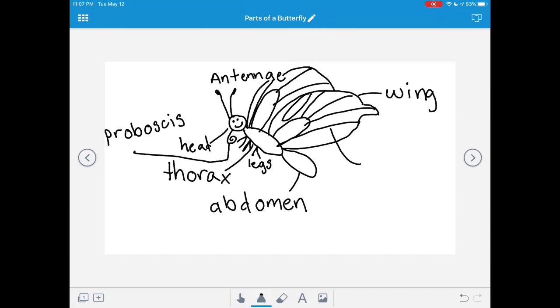Then let's draw a line from one of the wing veins that you drew. And we'll label it wing veins. Wing, w-i-n-g, and then a new word veins, v-e-i-n-s, wing veins.